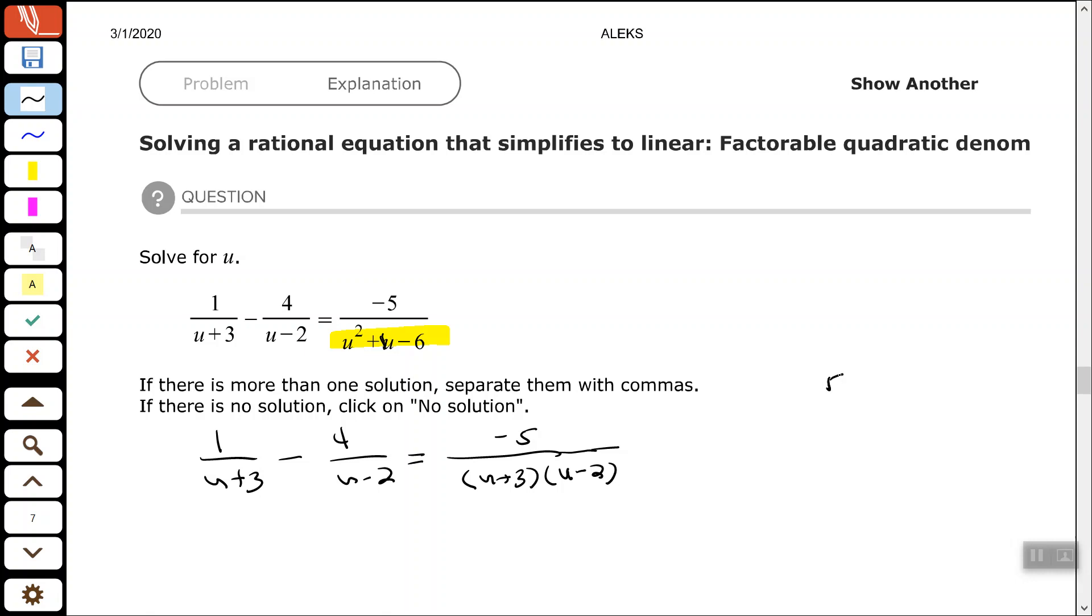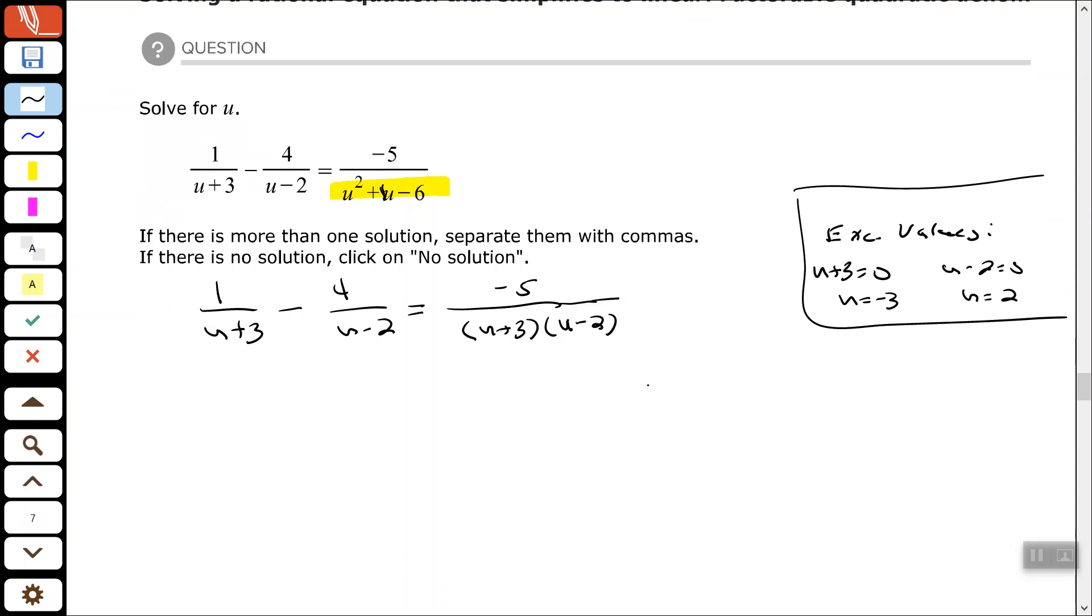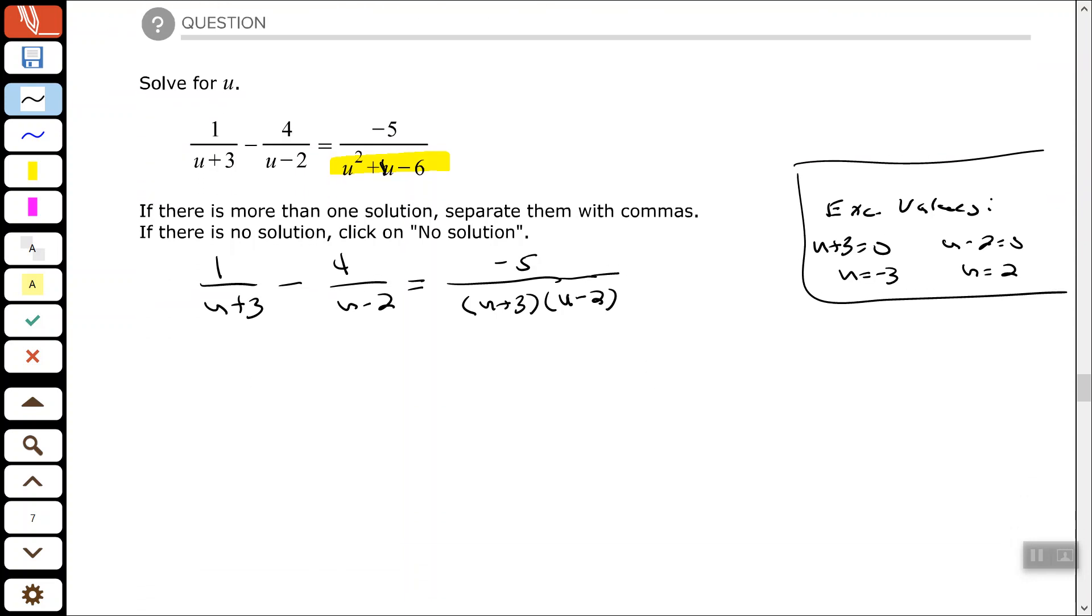So let's come out to the side and identify our excluded values. My factors that I have in my denominator that has variables within them is u plus 3 and u minus 2. So I will set each one of those equal to 0 and solve. Subtract 3 from both sides, so one of my excluded values is negative 3. Add 2 to both sides, my other excluded value is positive 2. So those are my excluded values.